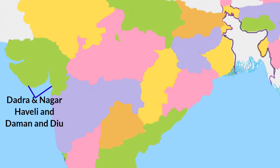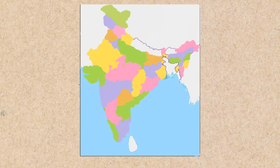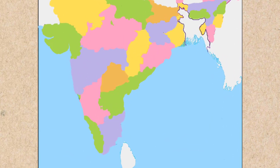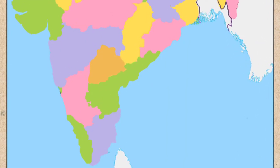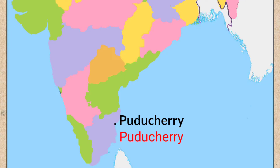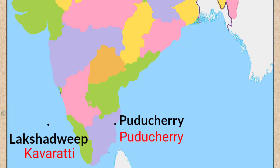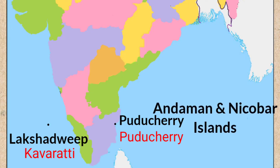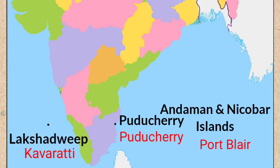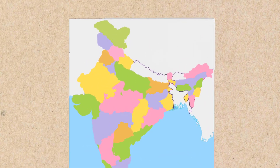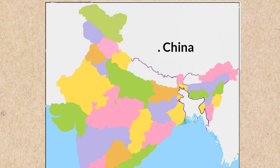Dadra and Nagar Haveli and Daman and Diu — its capital is Daman. Puducherry — its capital is Puducherry. Lakshadweep — the capital of Lakshadweep is Kavaratti. Andaman and Nicobar Islands — Port Blair is the capital of Andaman and Nicobar Islands. Now let's see the boundary countries of India.